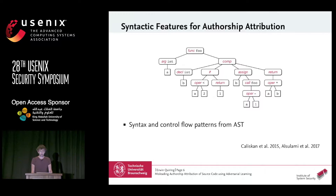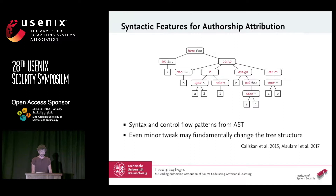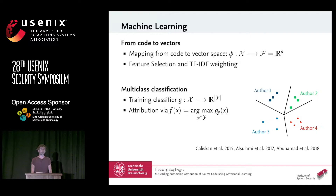Another class of features are syntax and control flow patterns from the abstract syntax tree. For instance, we could use the number of adjacent tree nodes as a feature — the joint occurrence of function and argument nodes, or if and component tree nodes. Manipulating such features is quite challenging without changing the whole tree structure.